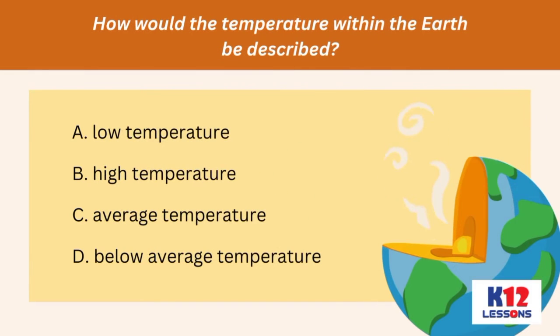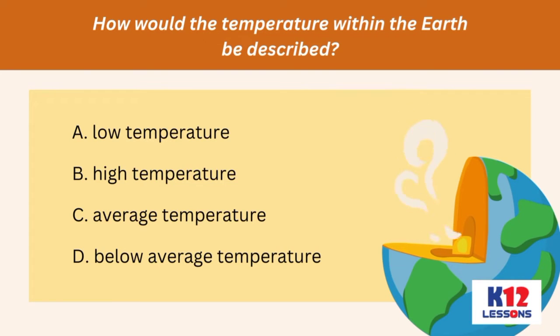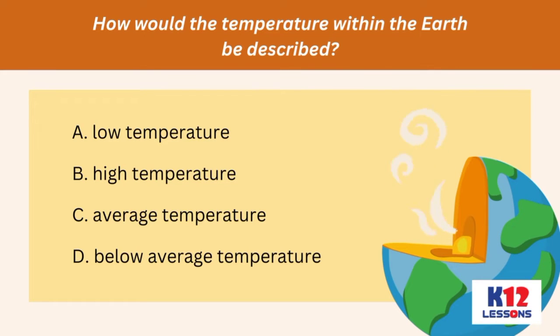How would the temperature within the earth be described? A. Low temperature. B. High temperature. C. Average temperature. D. Below average temperature.